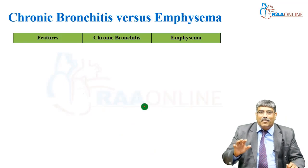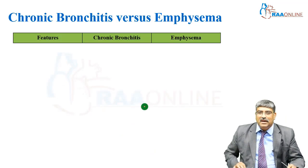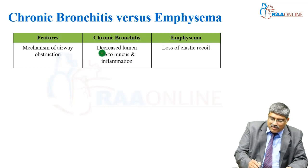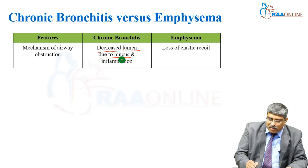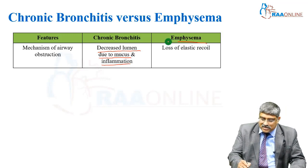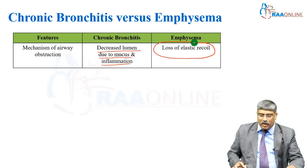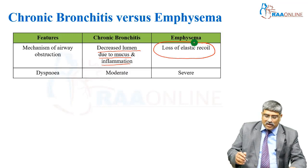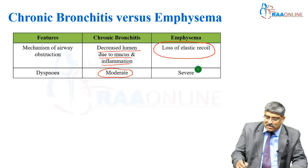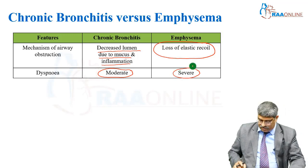To compare chronic bronchitis and emphysema: the mechanism in chronic bronchitis is decreased lumen due to mucus and inflammation, but in emphysema it is loss of elastic recoil. Coming to dyspnea, it is moderate in chronic bronchitis but severe in emphysema.